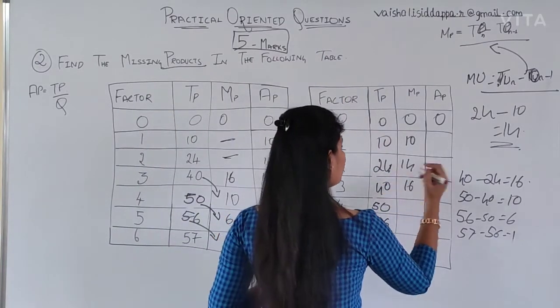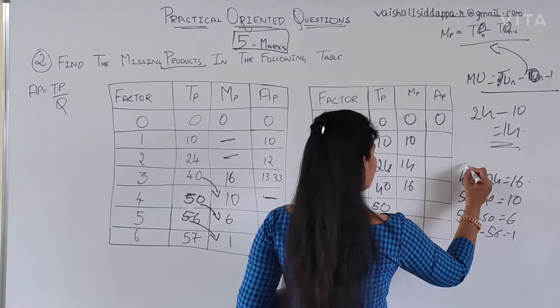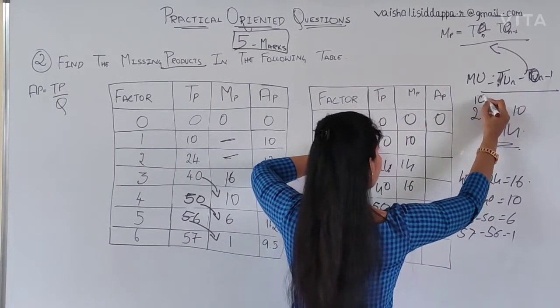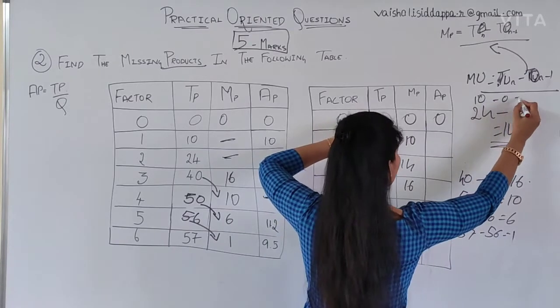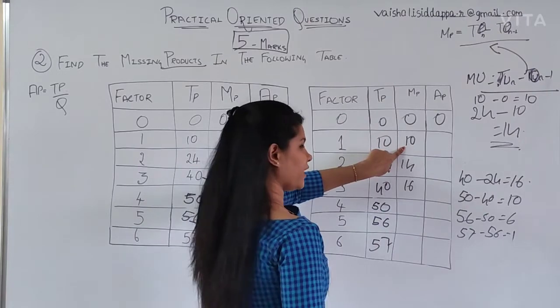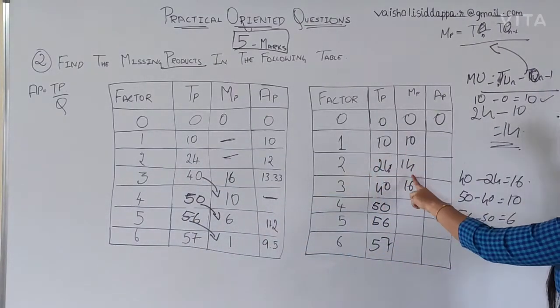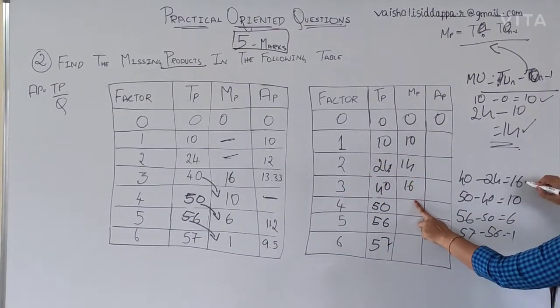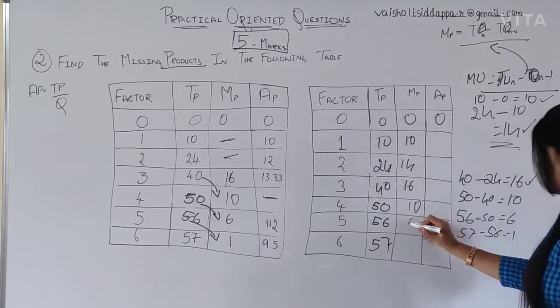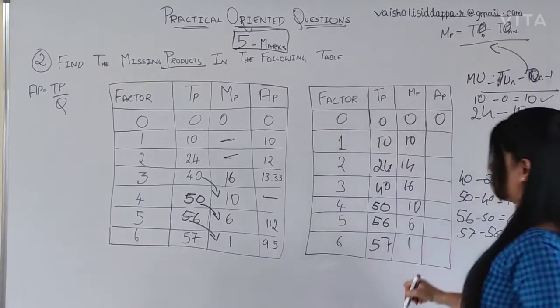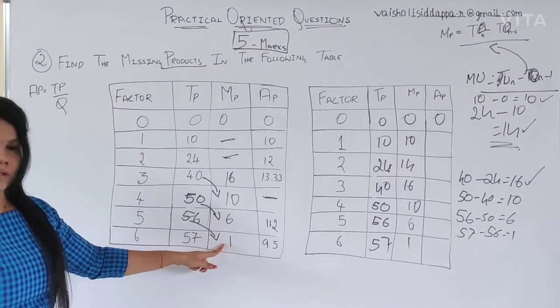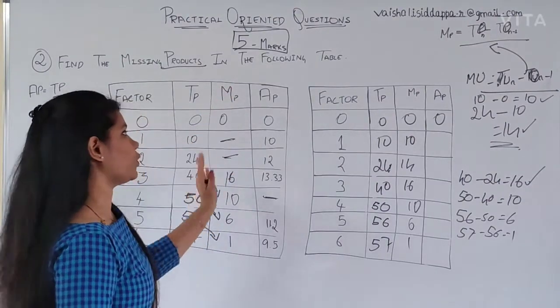50 minus 40 will be 10. 56 minus 50 is nothing but 6. 57 minus 56 is nothing but 1. From the second one, subtract the first one. So, the same way now, you got this before this. 10 minus 0 is nothing but 10. You got it? How I got the 10? 10 I have written. 14 I have written. 16 I have written. Here 10, 6, 1. Can you see this? This is the way how you are going to get MP.